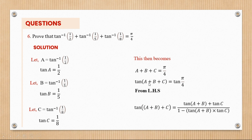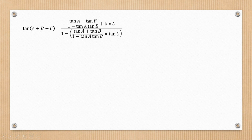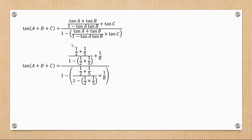Looking at the left hand side, because there are three terms I'll first group a and b, giving (a plus b) plus c. Expanding using the compound angle formula gives: tan(a+b) plus tan c, all over one minus tan(a+b) times tan c. Then expanding tan(a+b) in both numerator and denominator gives: tan a plus tan b over one minus tan a tan b, plus tan c, all over one minus that fraction times tan c.